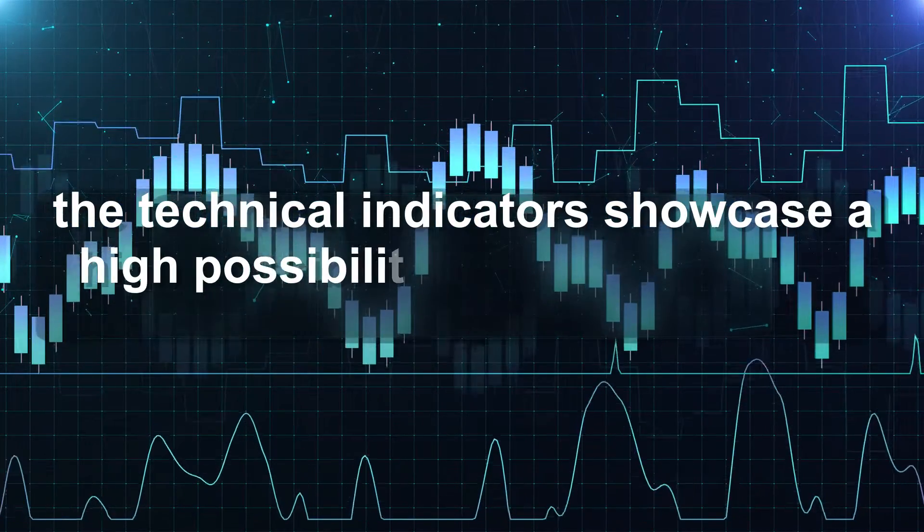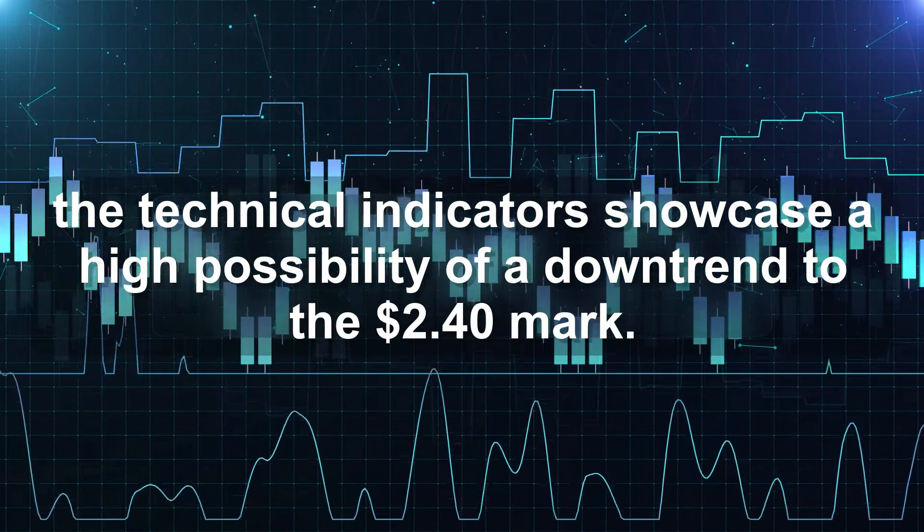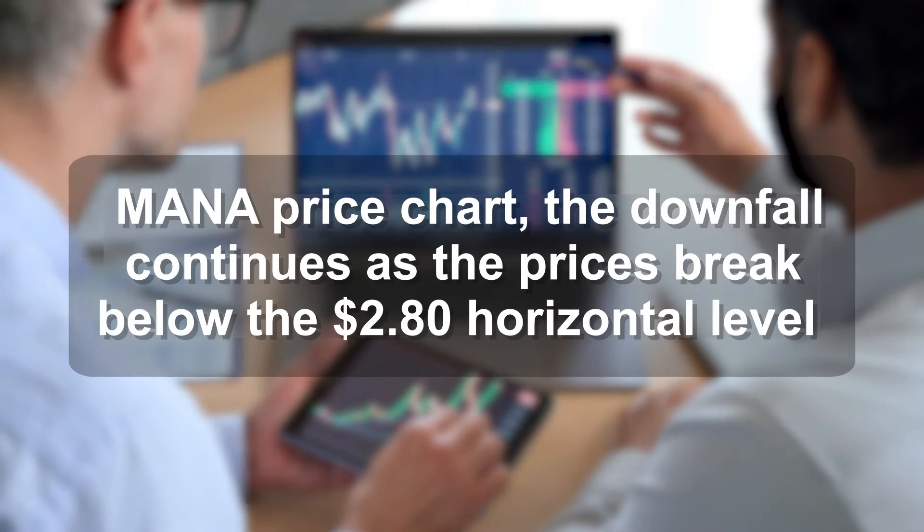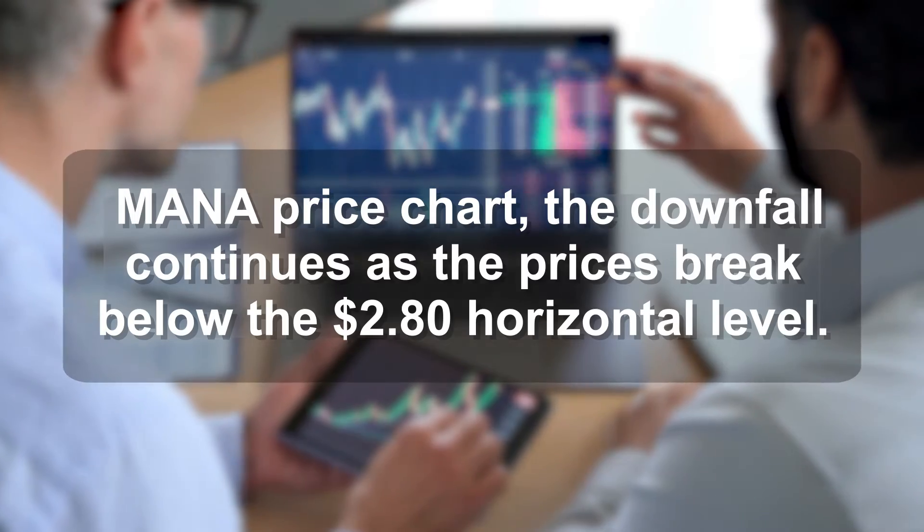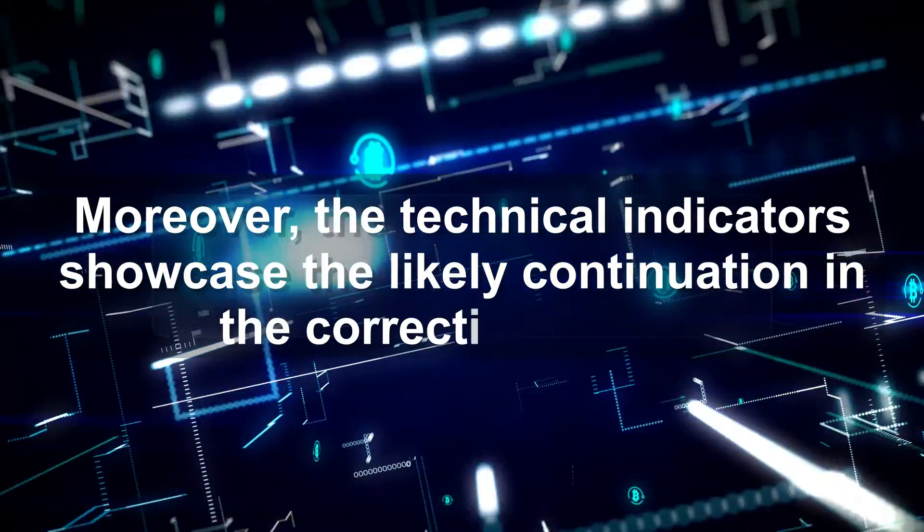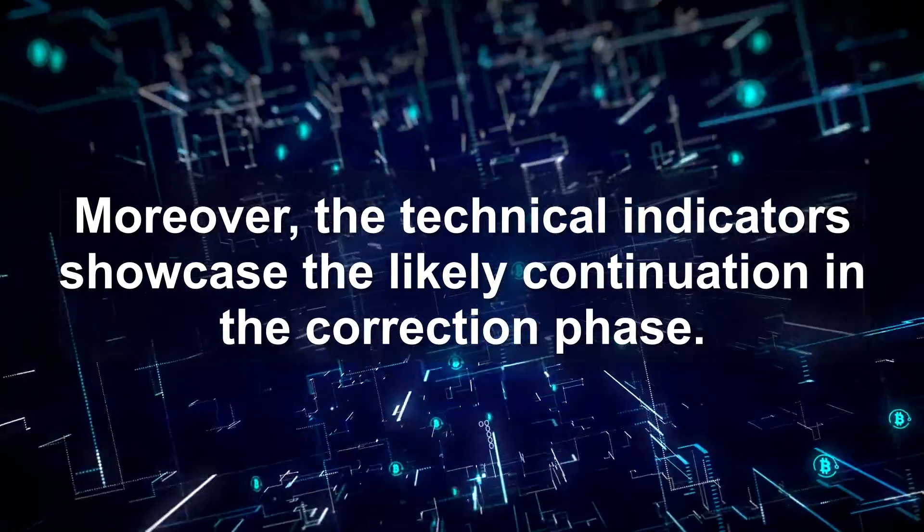Hence, the technical indicators showcase a high possibility of a downtrend to the $2.40 mark. In the Mono price chart, the downfall continues as the prices break below the $2.80 horizontal level. Moreover, the technical indicators showcase the likely continuation in the correction phase.